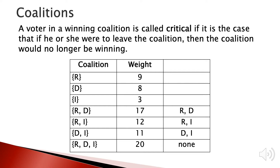In a winning coalition, if a voter leaves the coalition and it is no longer winning, we call that voter a critical voter. In the coalition R&D, if R or D leaves the coalition will no longer be winning, so R and D are both critical. In the coalition R&D&I, no matter who leaves the remaining coalition is still winning, so there is no critical voter in this case. We only consider one voter leaving at a time to determine if a voter is critical.